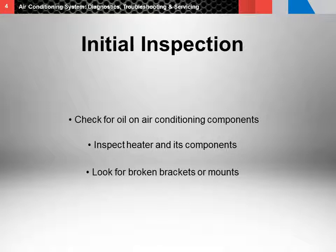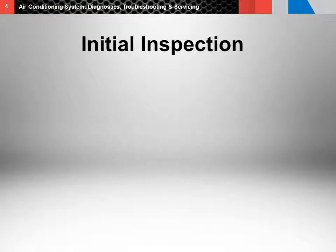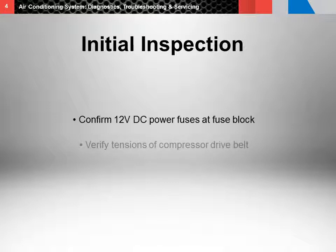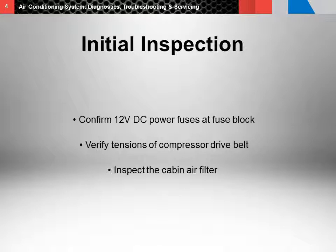Look for broken brackets or mounts, paying attention to any component that is coming into contact with or rubbing another component. You'll also want to confirm 12-volt DC power to and from the air conditioning system fuses at the fuse block. Verify the proper tension of the compressor drive belt and make any necessary corrections. Inspect the cabin air filter and replace it if necessary. Proper airflow across the evaporator is essential for air conditioning operation.